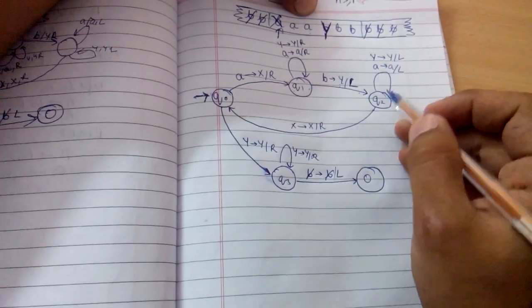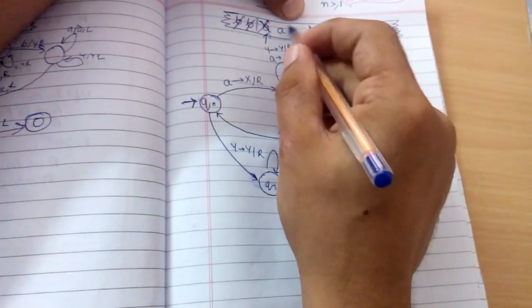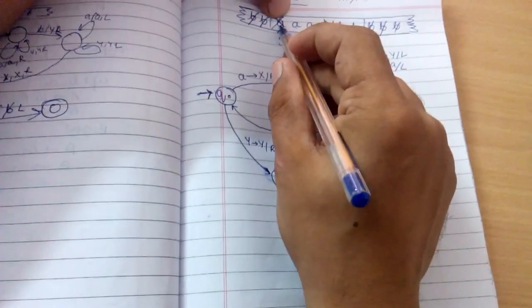Then we go all the way to the left, scanning all the a's, and if any y's are there we scan those also, and then we reach this x.